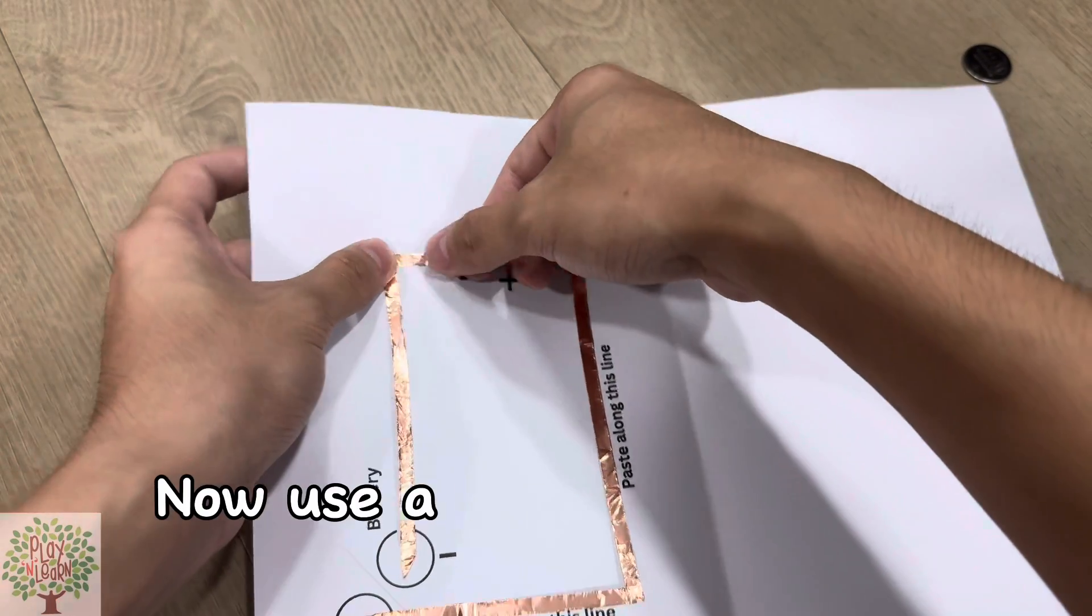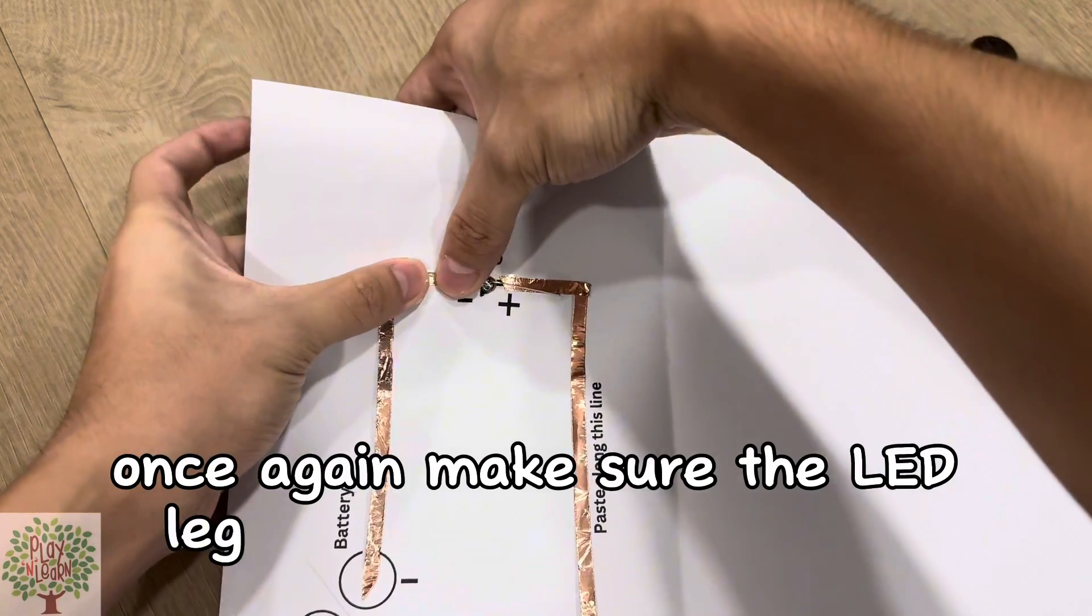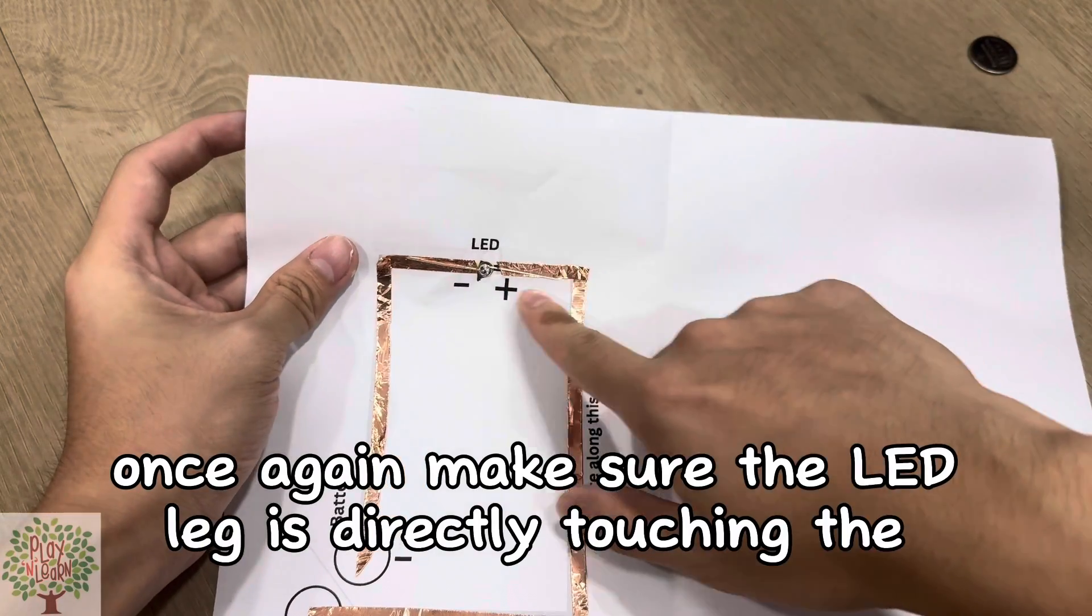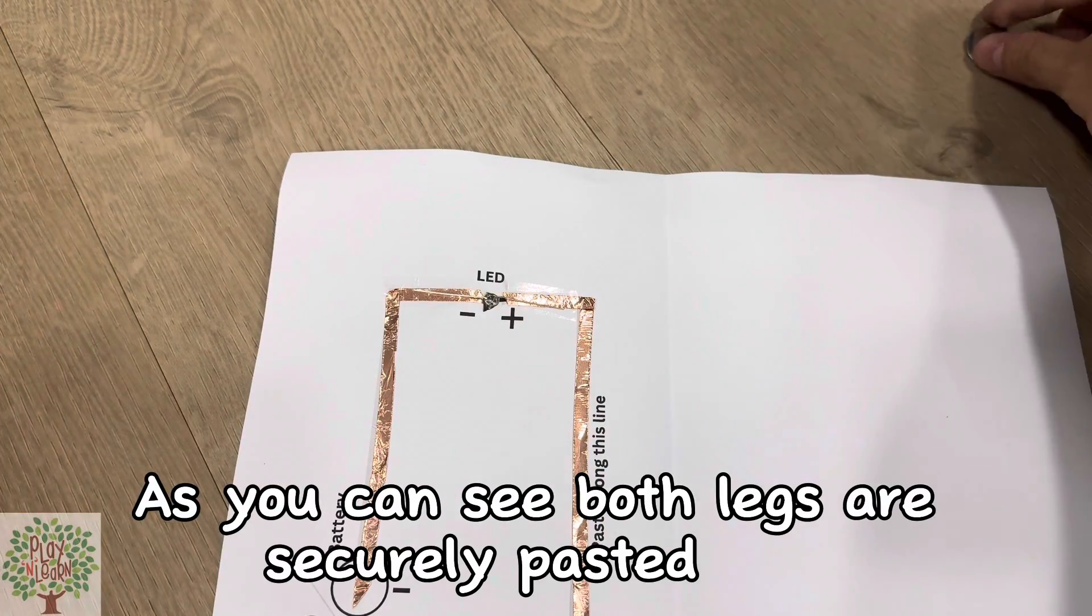Now use tape to tape the other leg. Once again, make sure the LED leg is directly touching the copper tape. As you can see, both legs are securely pasted.